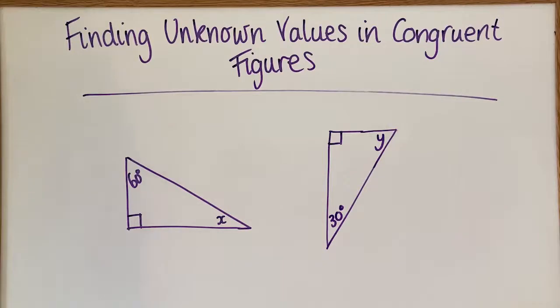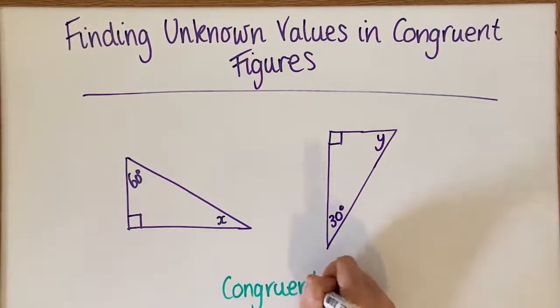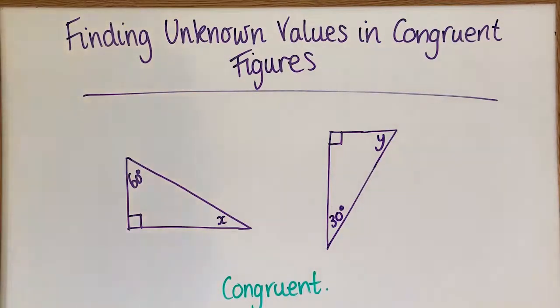So on this first question, if these two shapes are congruent, if you're told that they're congruent, then that means they're exactly the same size and shape. We've learnt that already.